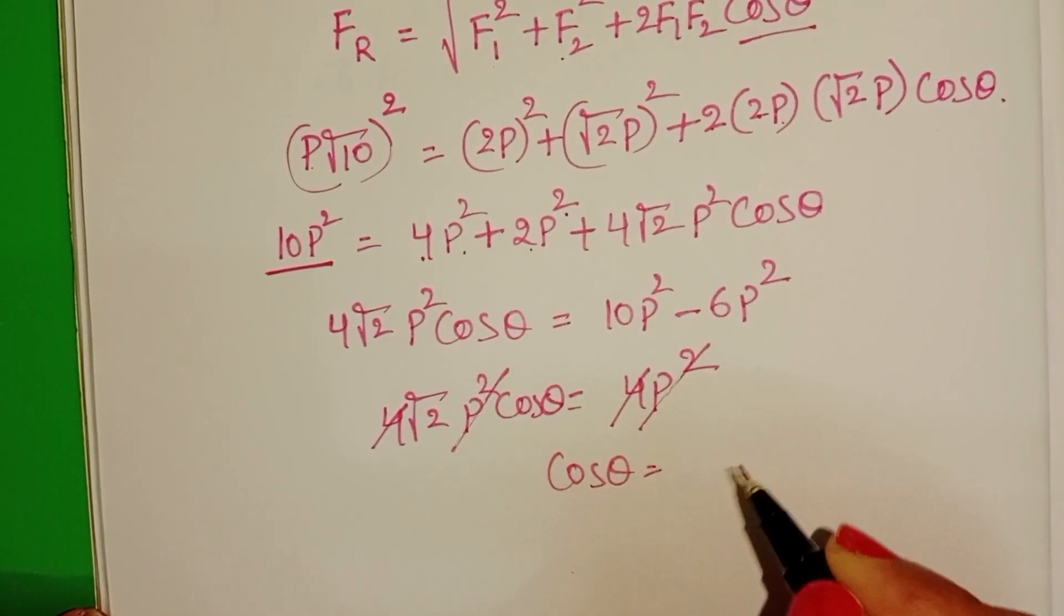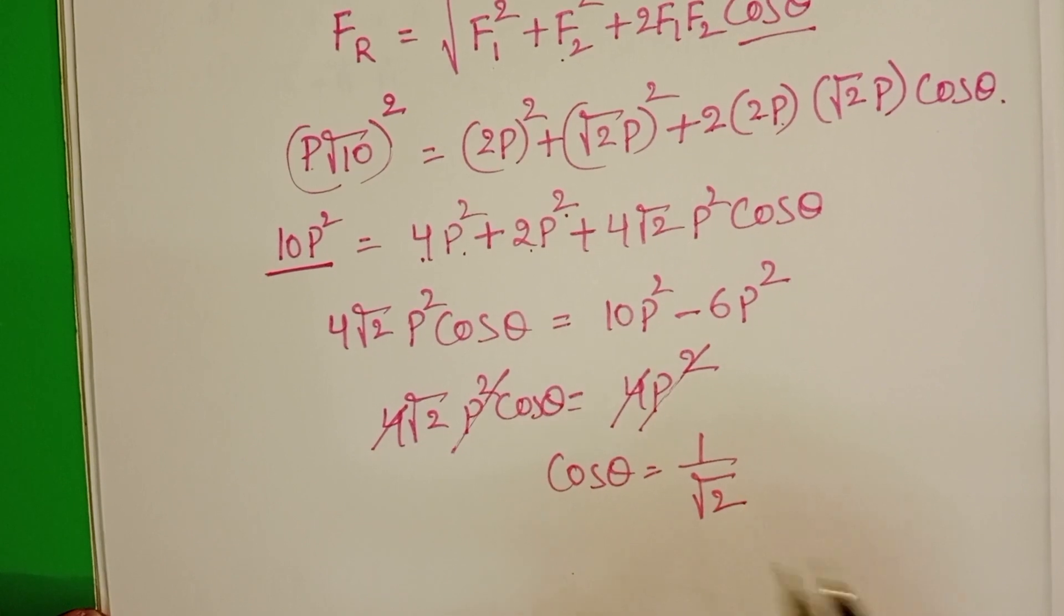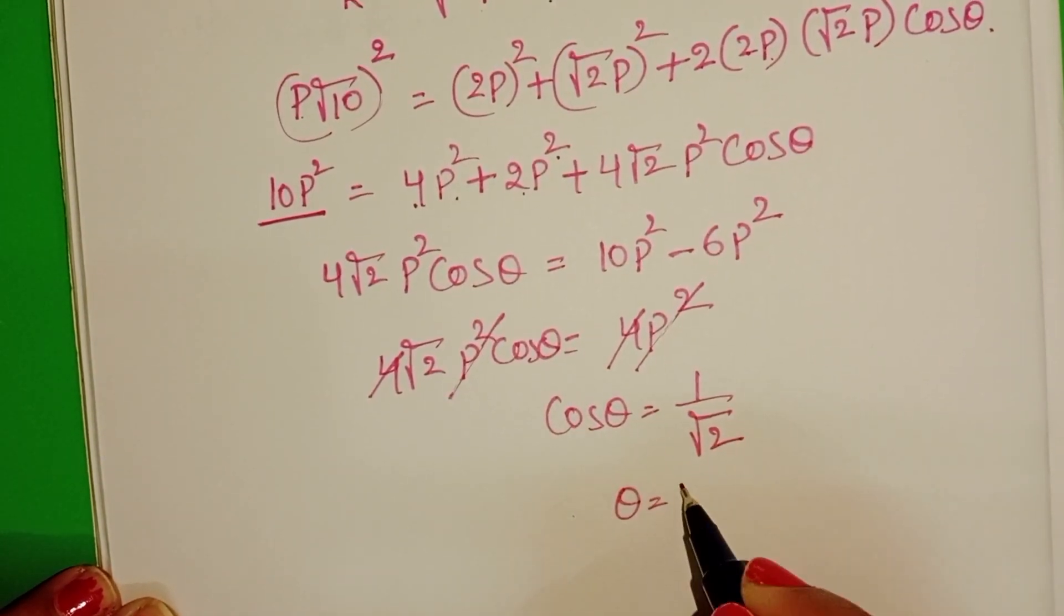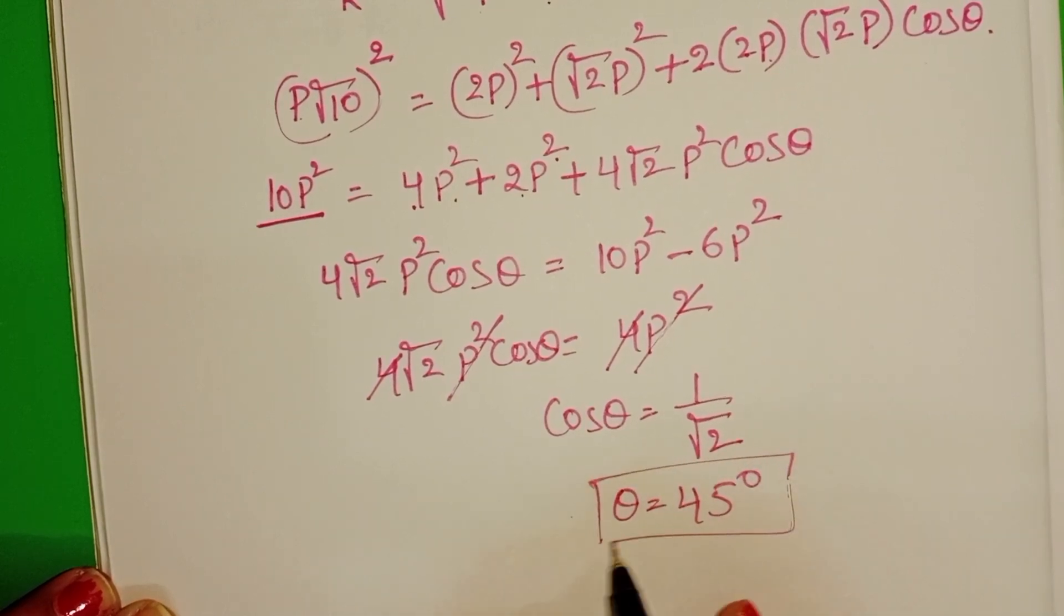Cos theta equals 1 by root 2. We know cos 45 degrees equals 1 by root 2. So, theta equals 45 degrees.